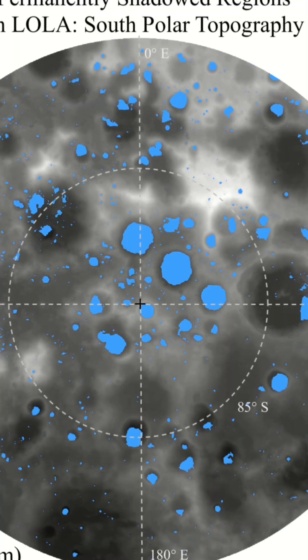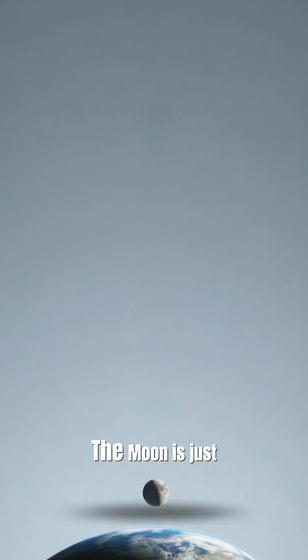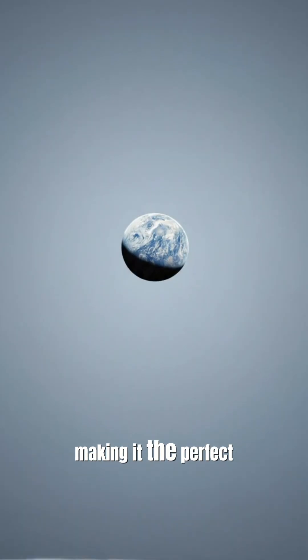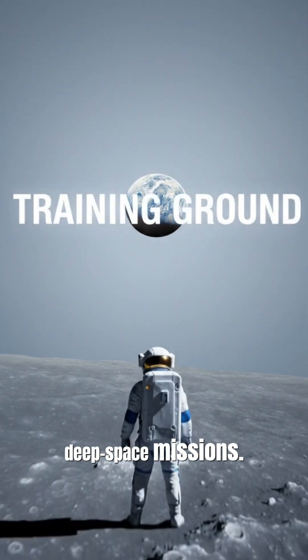Moon or Mars? Which comes first? The Moon is just 384,000 kilometres away, making it the perfect training ground for deep space missions.